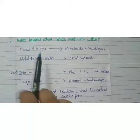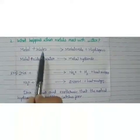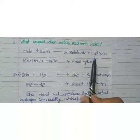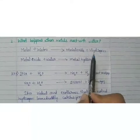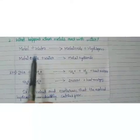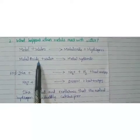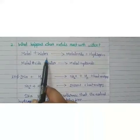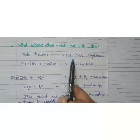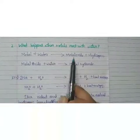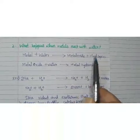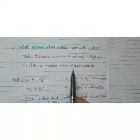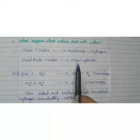When metals react with water, first it will produce a metal oxide and also produces hydrogen gas. When this metal oxide reacts with some more amount of water, it will produce metal hydroxide. So the first step is: metal reacts with water to produce metal oxide, and when this metal oxide reacts with more water it produces metal hydroxide.